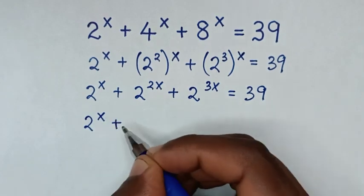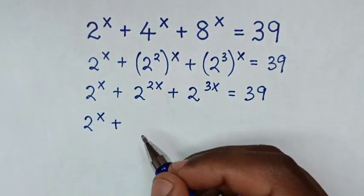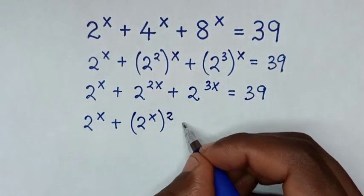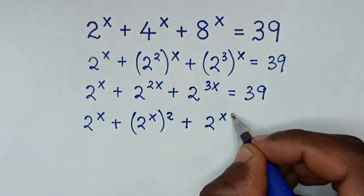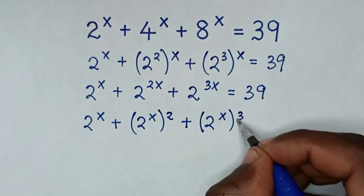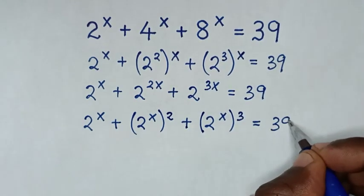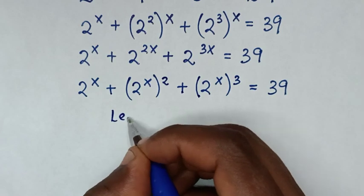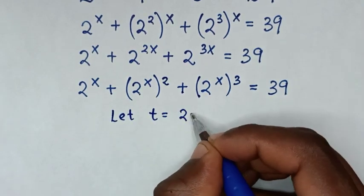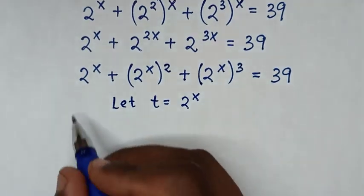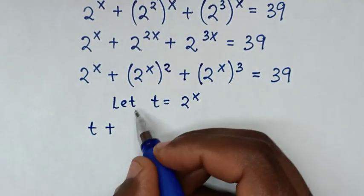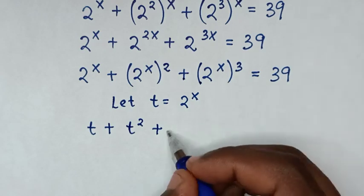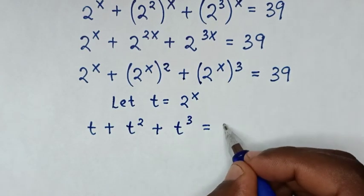In the next step, we make the power x inside the bracket, so it will be 2^x, bracket power 2 outside, plus 2^x, bracket power 3 outside, is equal to 39. Here, 2^x is common, so we let t = 2^x. Then our equation will be t + t^2 + t^3 = 39.